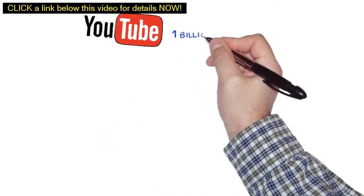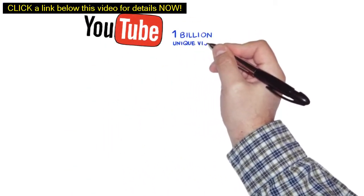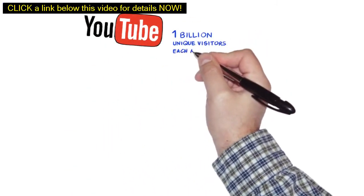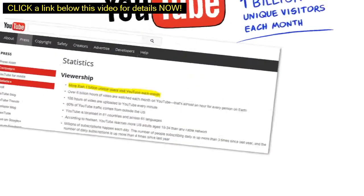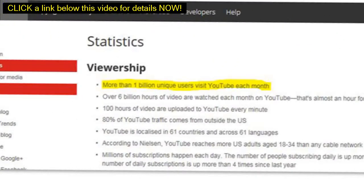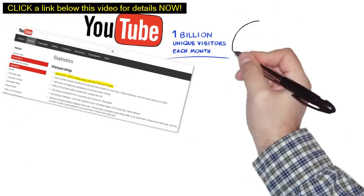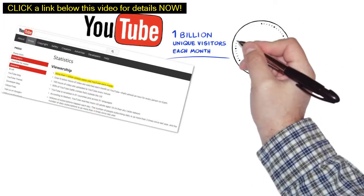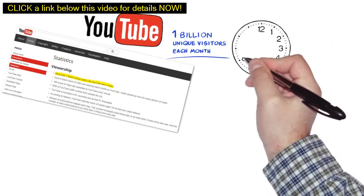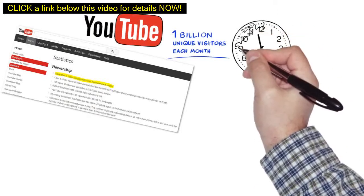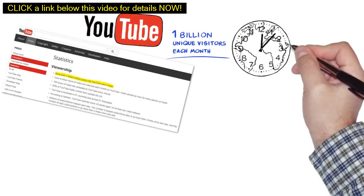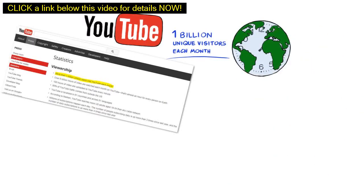Did you know that YouTube gets over 1 billion unique visitors each month to its website? Now you do. And did you know that over 6 billion hours of videos are being watched each month on YouTube? That's almost one hour for every person on Earth.